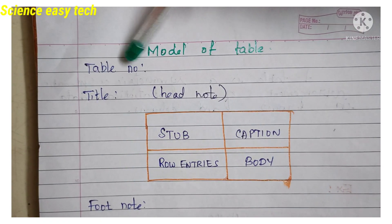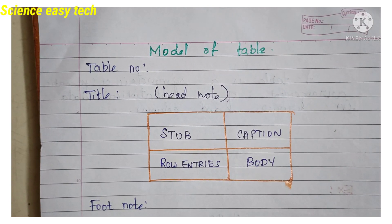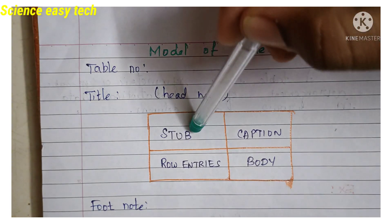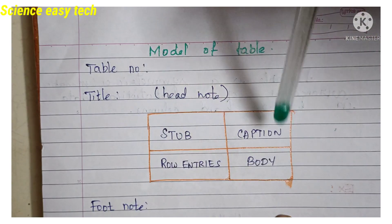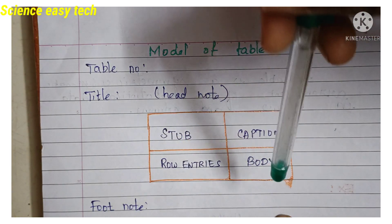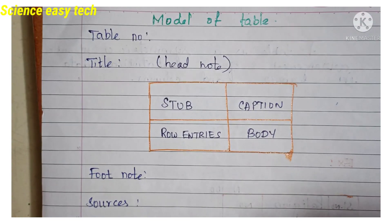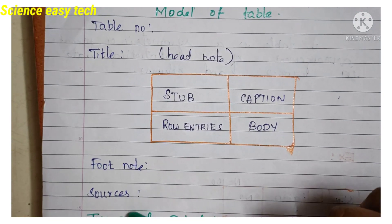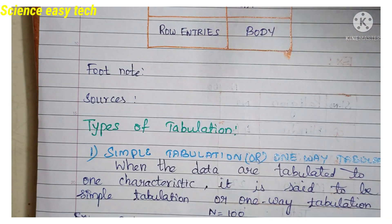Next, the model or specimen of a table. A table should include: the table number, the title, and head notes in brackets below the title. The stub contains row entries, the caption represents column headings, and the body contains the data entries. Footnotes and source of information are written at the bottom.